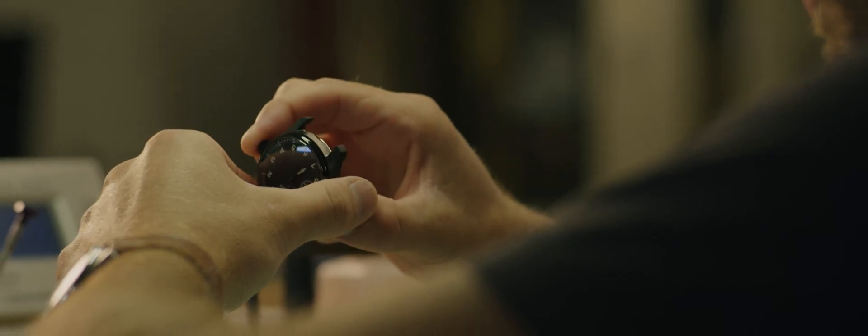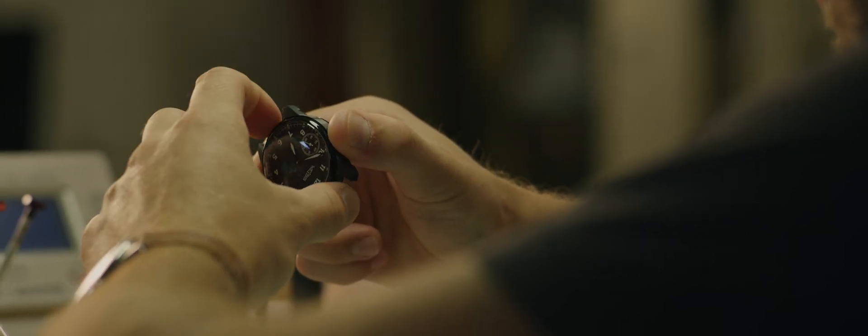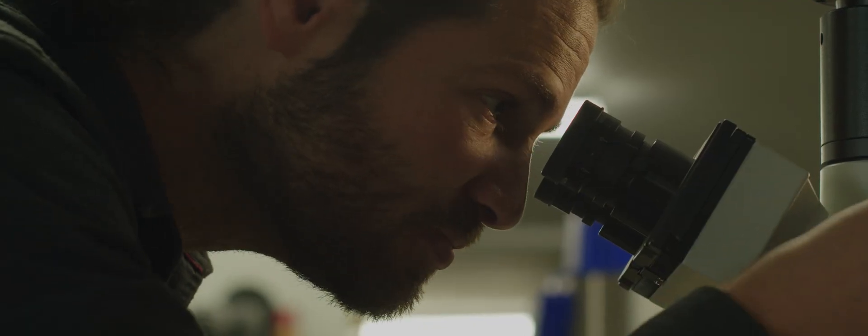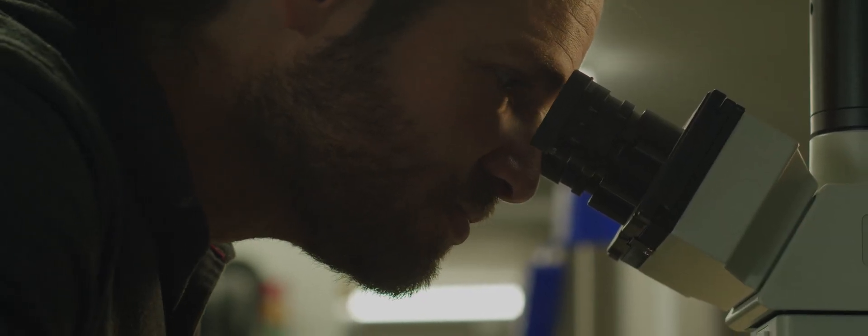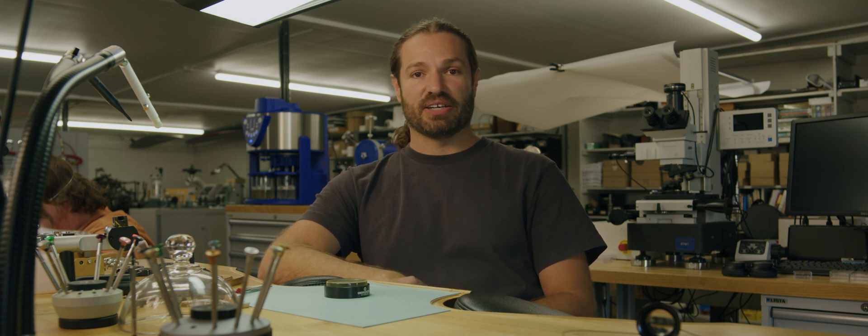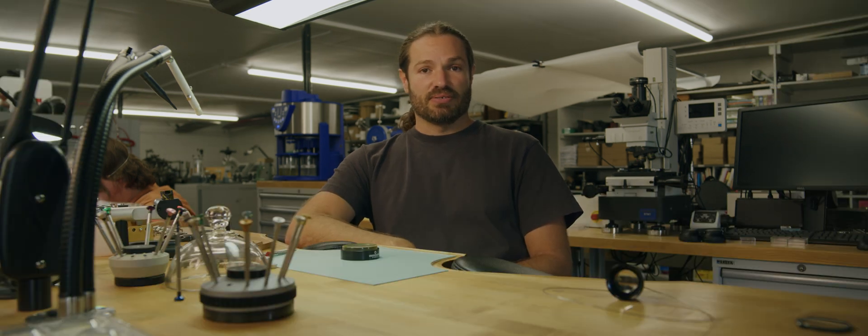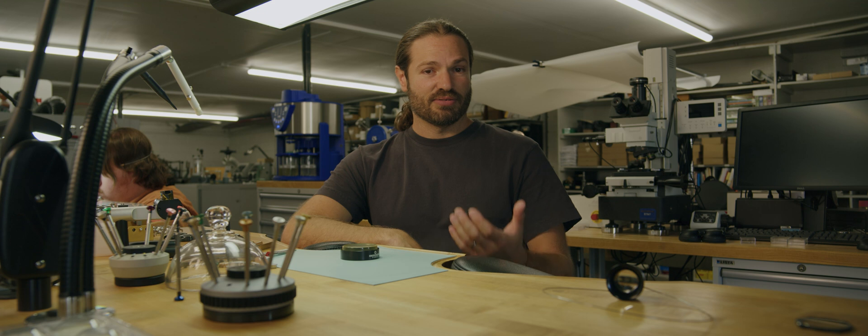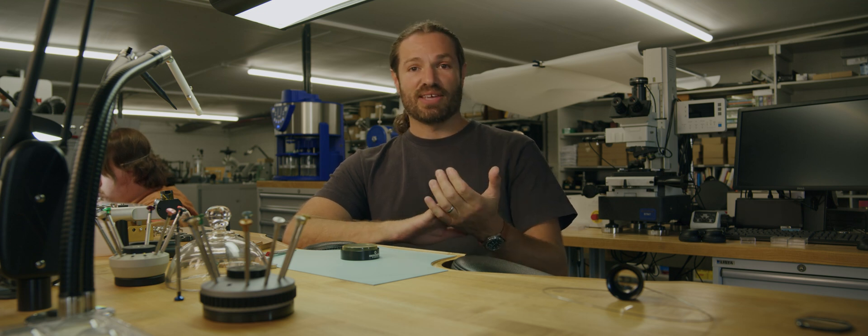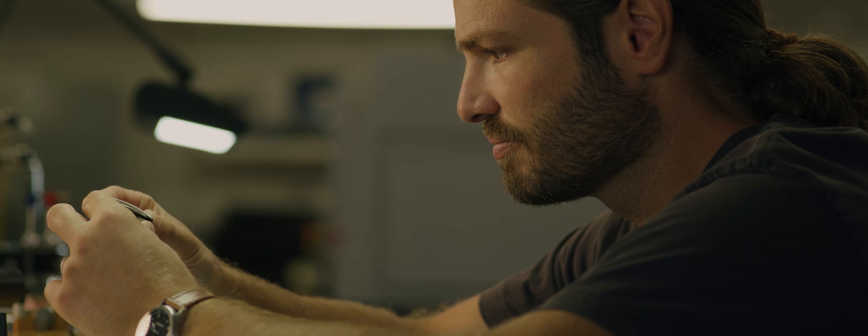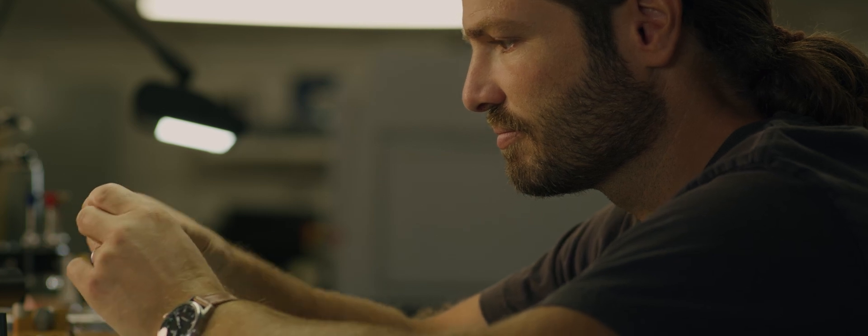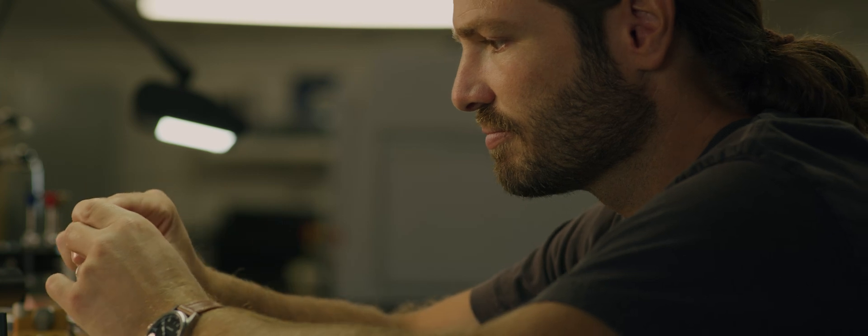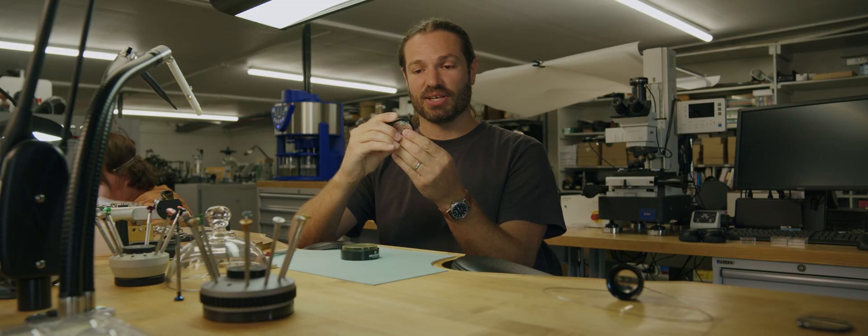The first step in quality control is going to be checking for any visual imperfections. The watchmaker will have looked at that watch under magnification using a loupe and maybe even a microscope. So when it gets to the quality control technician, their job is not to look at it under magnification, but to look at it with the naked eye. The typical test is about 12 inches from your face with regular light. So nothing over the top, no special lighting or special magnifiers, simply holding the watch 12 inches from your eyeballs and looking at it.